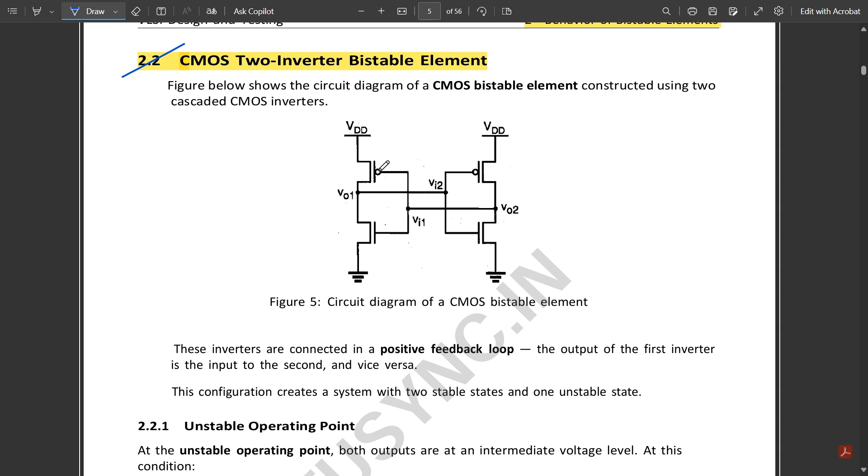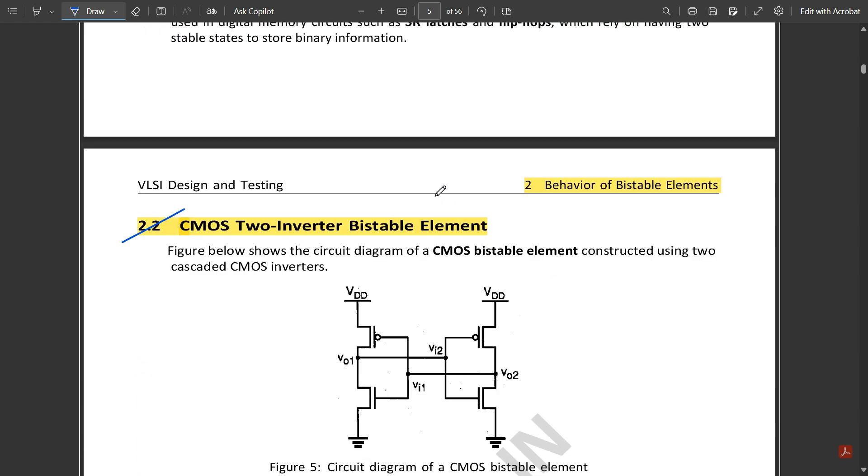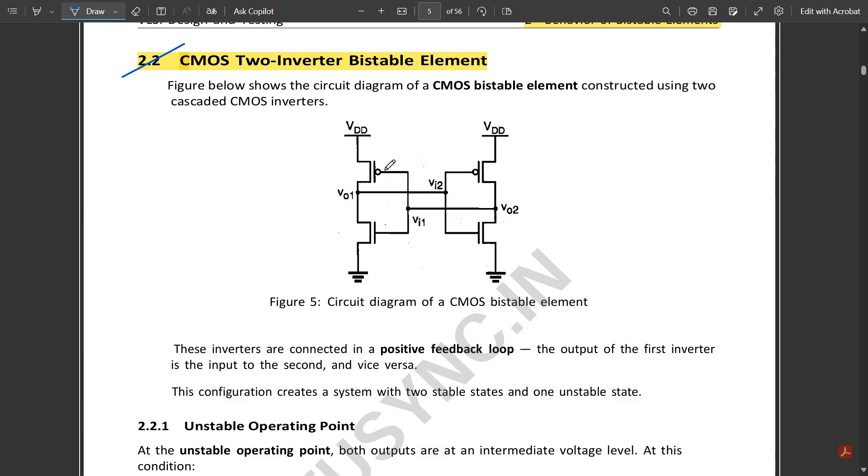This is one inverter where the output is given to the input of the next inverter, and the input of this inverter is given to the output of the other inverter. Based on this connection, the connections are made using CMOS implementation of a two-inverter bistable element.